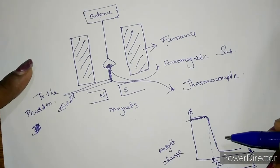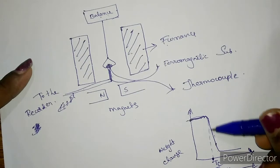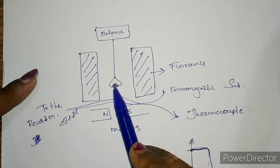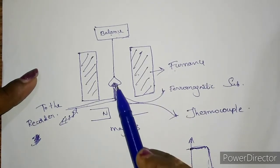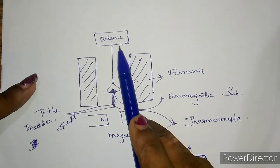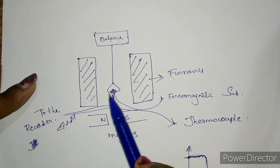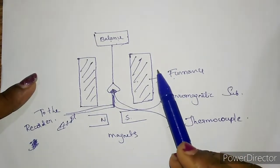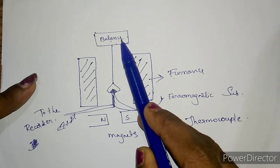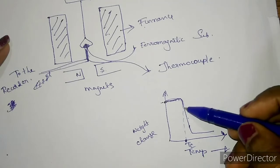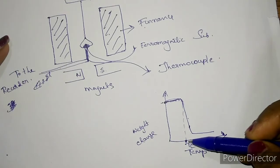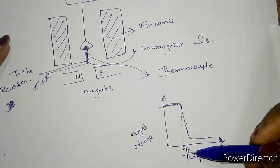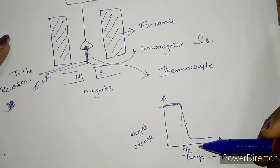So this is how you can determine the Curie temperature of the ferromagnetic material by means of TGA. First, keep your ferromagnetic material in the sample holder and keep the magnet below it. Because of the attraction, the weight will be very high compared to the actual weight. Then apply heat by means of the furnace at regular intervals and measure the weight of the sample. Plot the graph, and the temperature at which there is a sudden change in weight gives the Curie temperature of the material. Hope it is clear. If you have any doubts, you can ask me in the comment section. Thank you for watching.